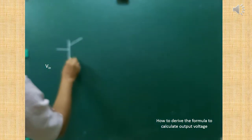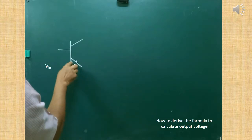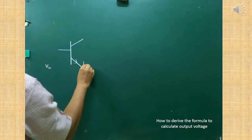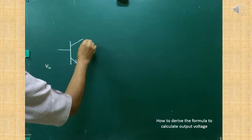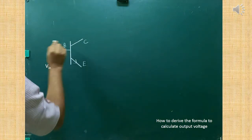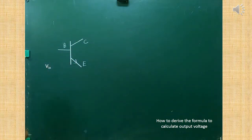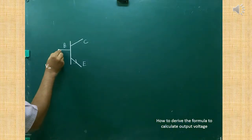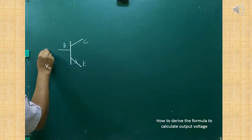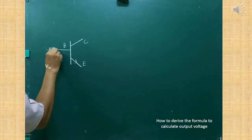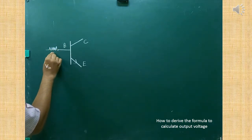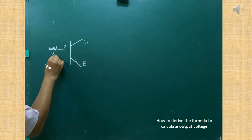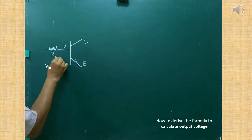Draw the arrowhead here. This is the emitter terminal, this one is the collector terminal, and this one is the base terminal. First draw the transistor. After that, in the input, connect one resistance at the base. The resistance connected at the base is called RB.